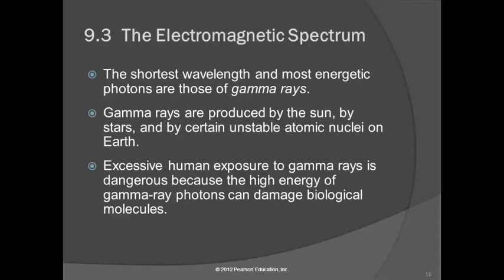So gamma rays, most energetic. They are produced by the sun and the stars, which are... the sun is a mass of incandescent gas, a gigantic nuclear inferno. And also certain unstable nuclei, nuclear reactions that can occur on earth will also give off gamma rays. Gamma rays can be very, very dangerous because they'll damage biological tissue.